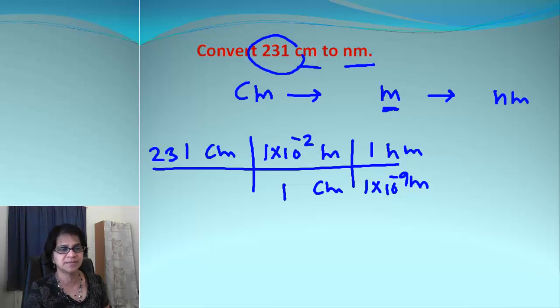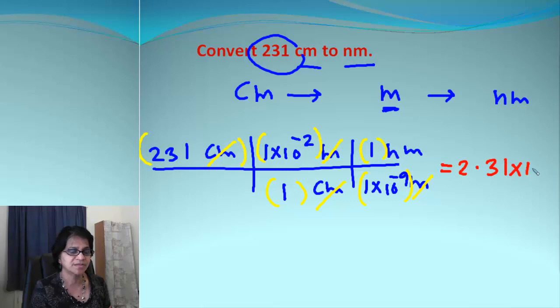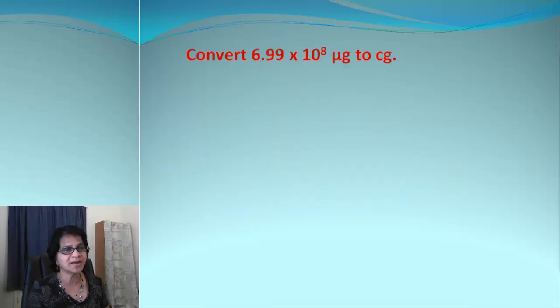After we are done with this, the next step is you cancel the units. When you cancel the similar units, you are left with all these numbers. And you're going to multiply and divide and get the final answer, which comes out to be 2.31 times 10 to the 9 nanometers.